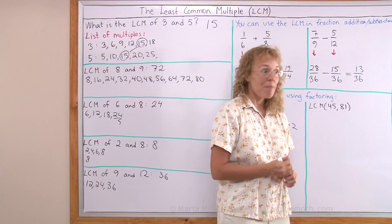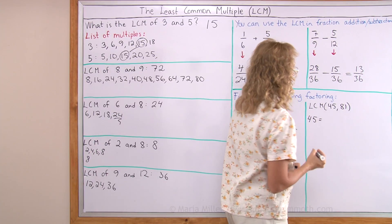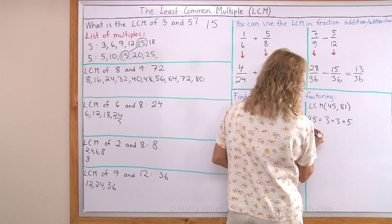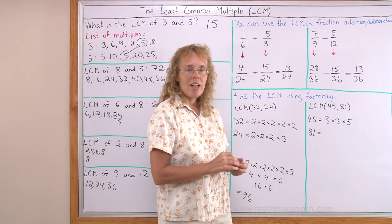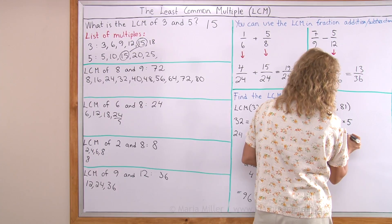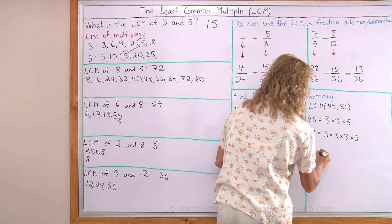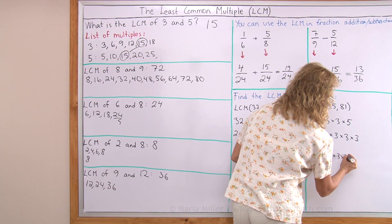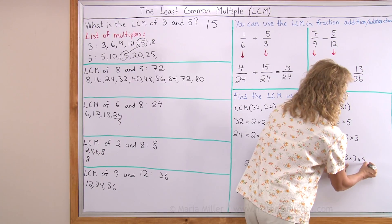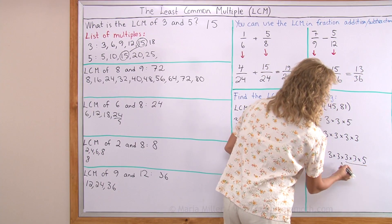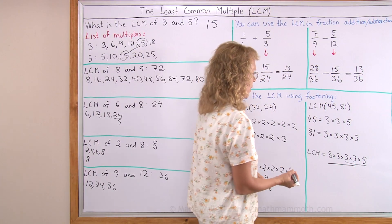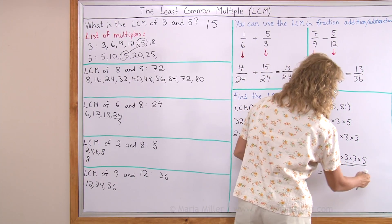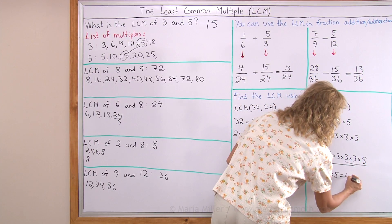Let's look at another example using prime factorization. 45 is 5 times 9, and 9 is 3 times 3, so we get 3 times 3 times 5. The LCM's prime factorization has to include both factorizations, so it has to have 3 times 3 times 3 times 3 times 5. That means 3 times 3 times 5 is from 45, and 3 times 3 times 3 times 3 is from 81. This gives us 81 times 5, which is 405.